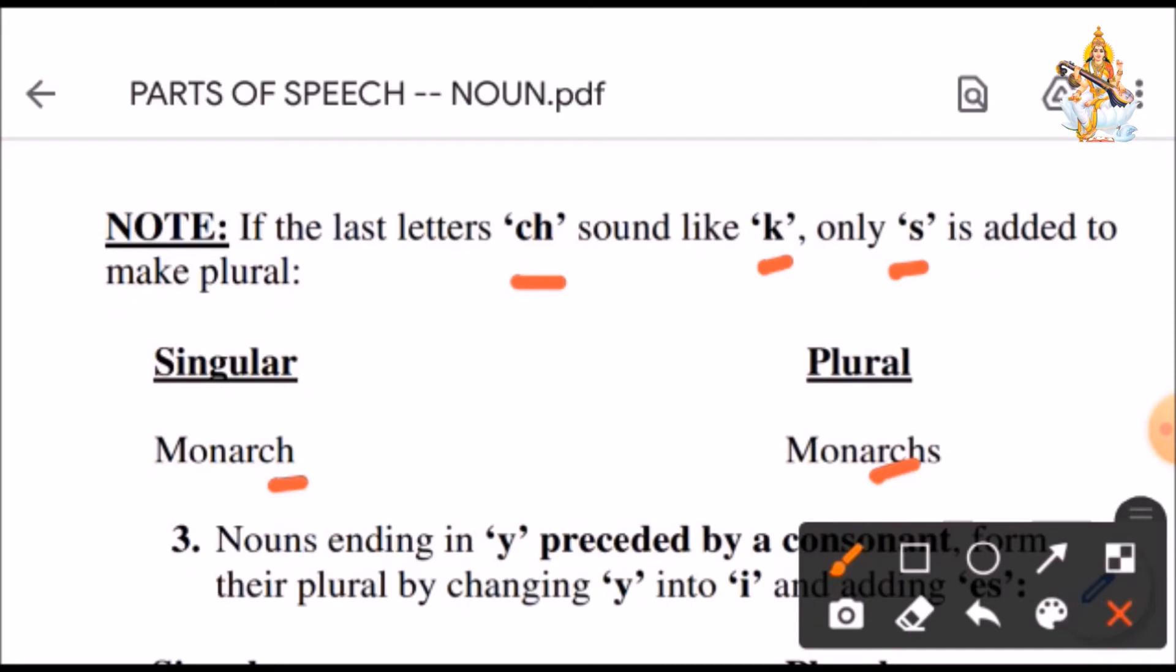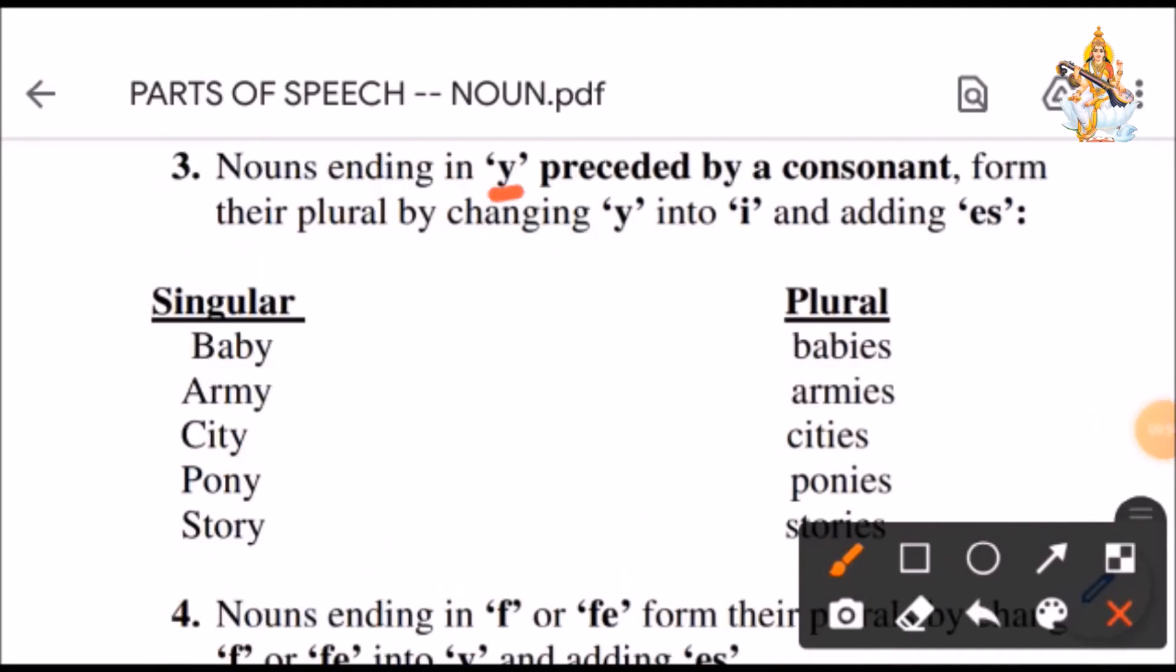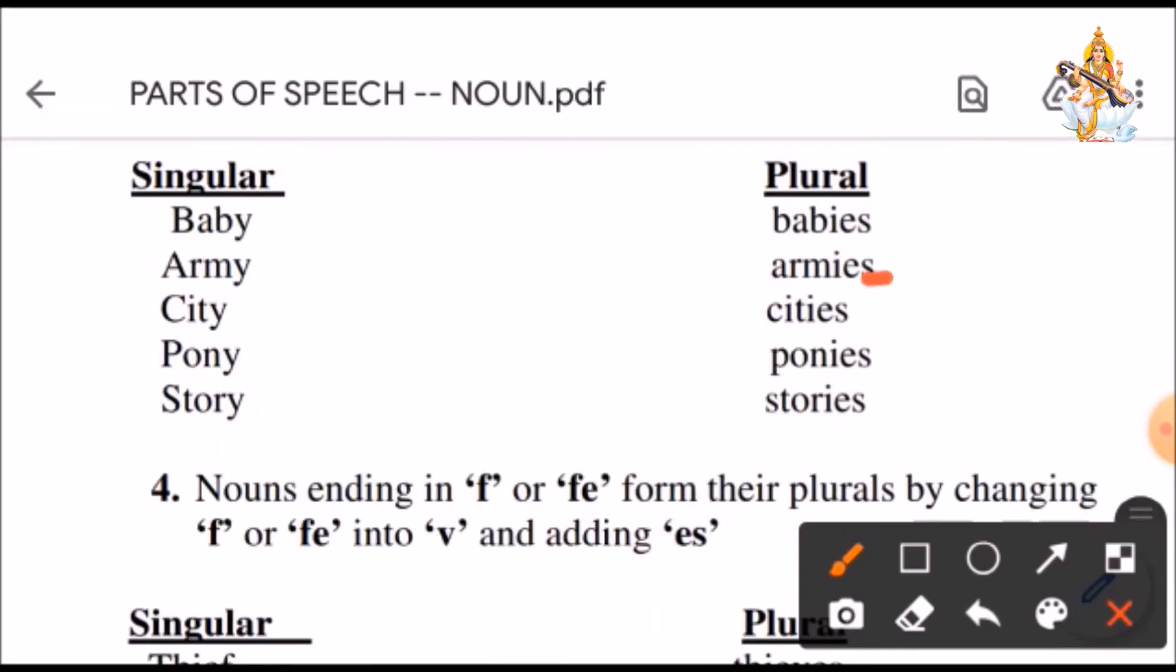Nouns ending with Y preceded by a consonant form their plurals by changing Y into I and adding ES. See, baby, it ends with Y and before Y there is a consonant word, letter B. We will convert Y into I and add ES. So, baby is babies, army is armies, city, cities, pony, ponies, story, stories.